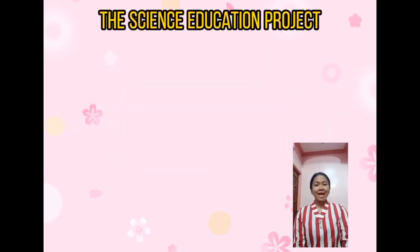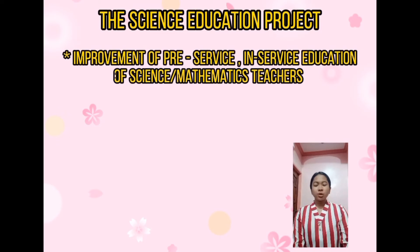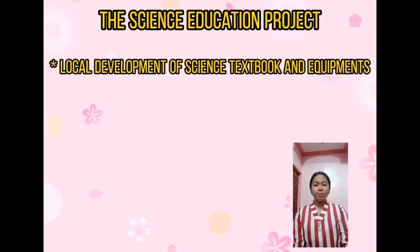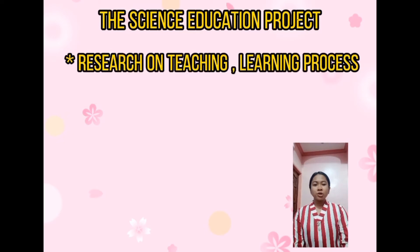The Science Education Project had three categories. In its major project, the objectives were: first, improvement of pre-service and in-service education of science and mathematics teachers; second, local development of science textbooks and equipment; third, evaluation of locally produced materials; and fourth, research on the teaching-learning process.